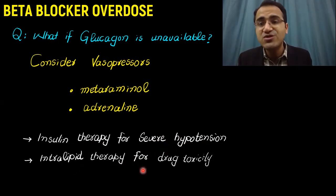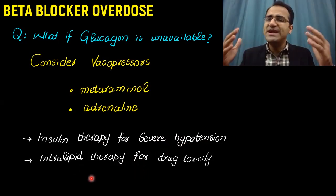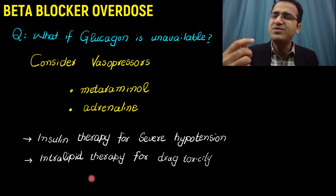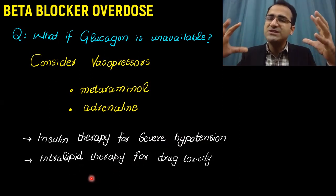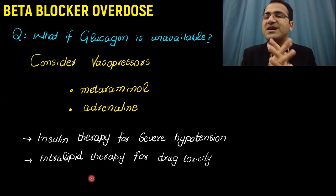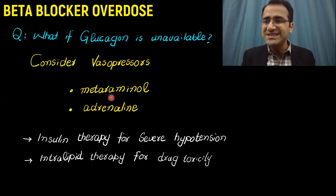Intralipid therapy can be used to reduce the drug toxicity. What you do in intralipid therapy is that you give lipids through IV line, and those lipids bind the beta blockers in blood and do not let them bind to the heart receptors. These must be used with senior consultations.